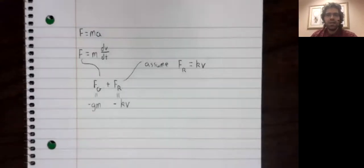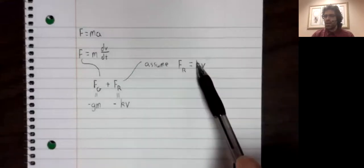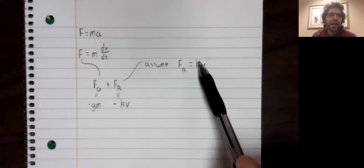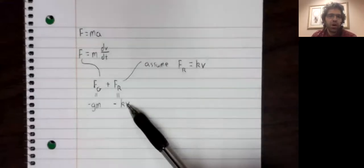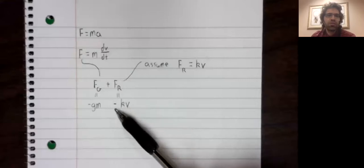What that means is that if the velocity is positive, the force due to air resistance should be negative. K is a positive constant, so we have that. If velocity is positive, this force is negative.